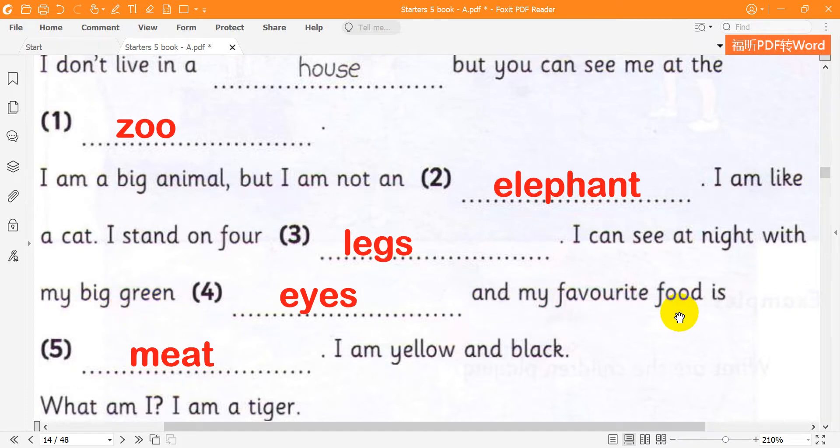And my favorite food is meat. I am yellow and black. What am I? I am a tiger. Okay. Thank you, Sophia.